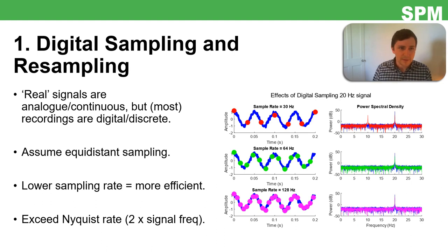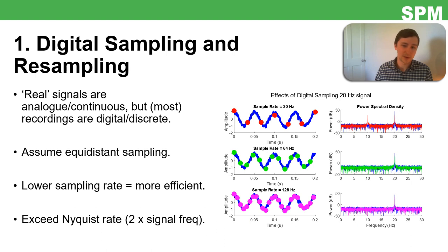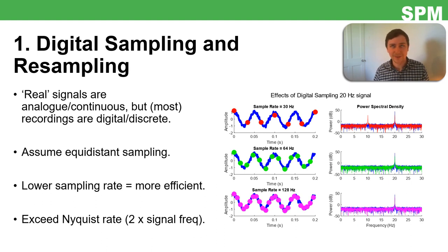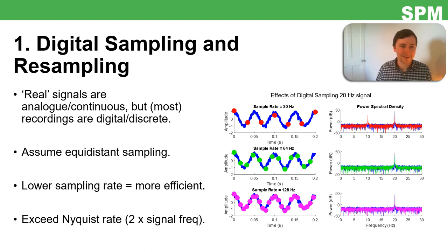You might think: just sample at the highest rate you can. That's not a good idea, because the lower your sampling rate, the more efficient everything will be — not just in terms of disk space (you can end up with pretty large files), but also in terms of how long it takes to run pre-processing steps and some analyses. You want it to be as low as you reasonably can.